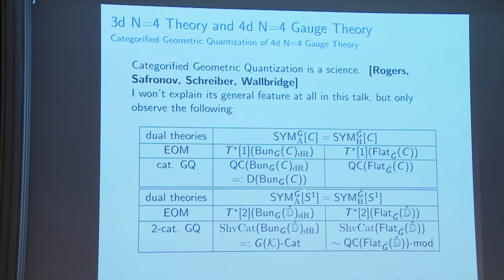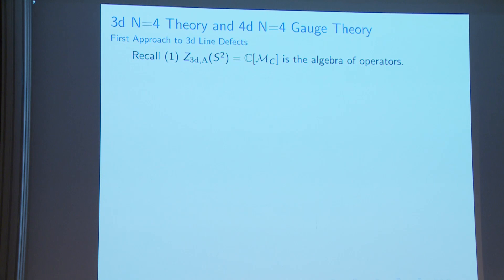The expected equivalence between these two things is local geometric Langlands, and the global version is global geometric Langlands. As Sasha hinted, this is not correct as written — there need to be modifications, and that's also something one can deal with.